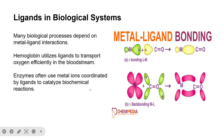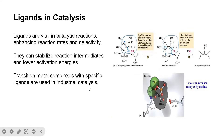Bridging ligands play essential roles in the formation of clusters and polymers. Many biological processes depend on metal-ligand interactions — for example, hemoglobin uses ligand binding to transport oxygen efficiently in the bloodstream, and enzymes often use metal ions coordinated by ligands to catalyze biochemical reactions. Ligands are also vital in catalytic reactions, enhancing reaction rate and selectivity, stabilizing reaction intermediates, and lowering activation energies. Transition metal complexes with specific ligands are used in industrial catalysis.